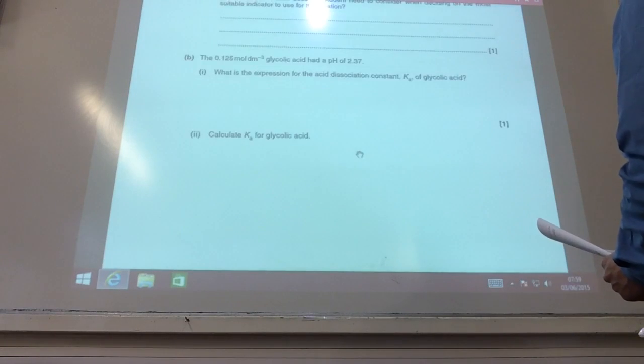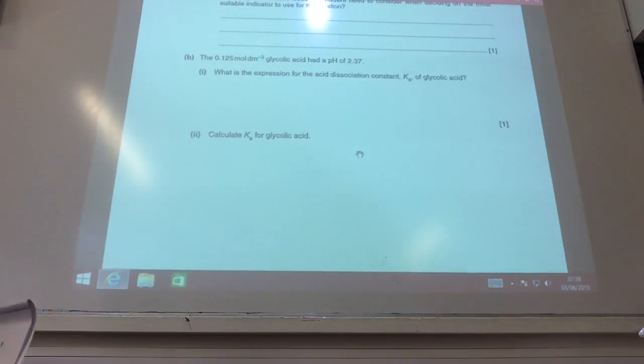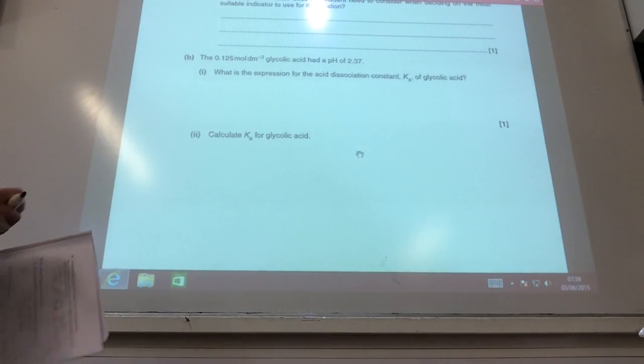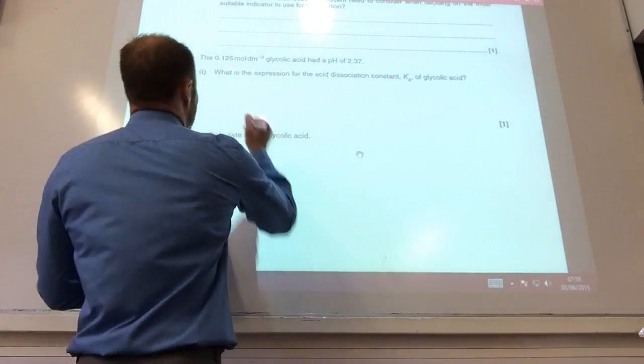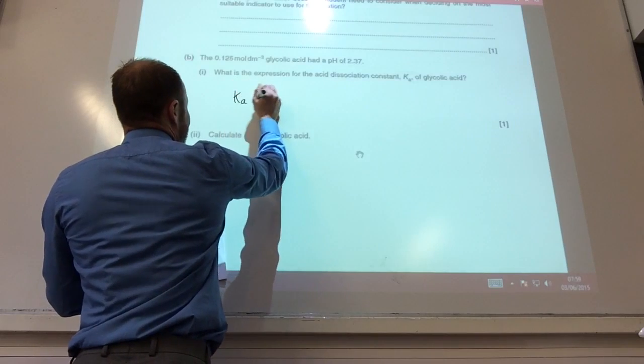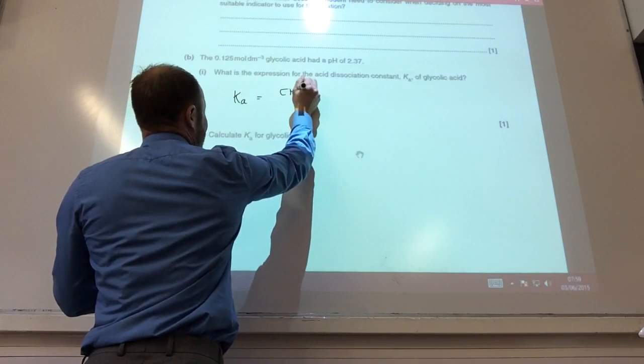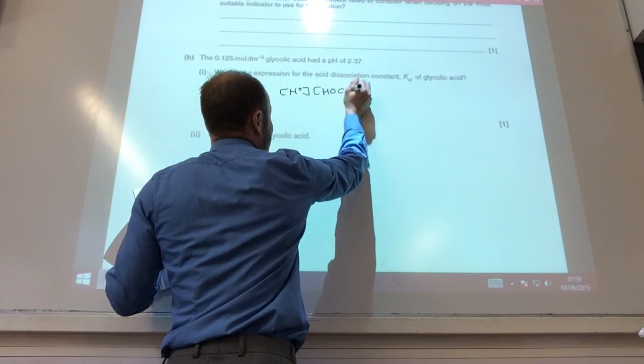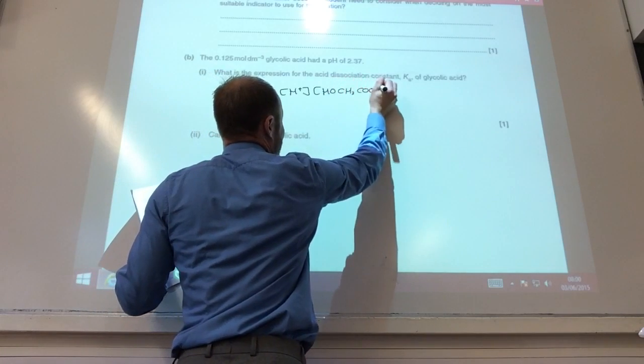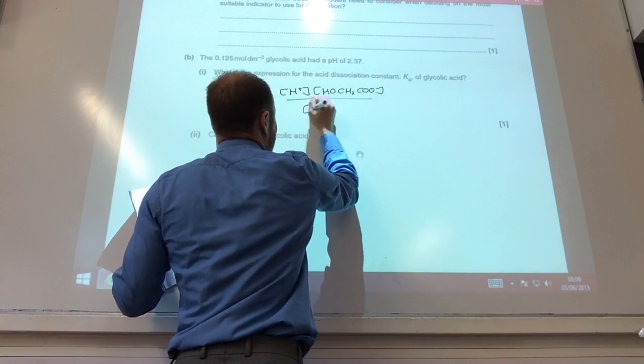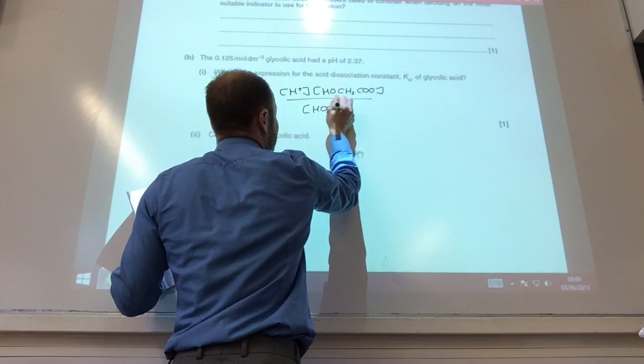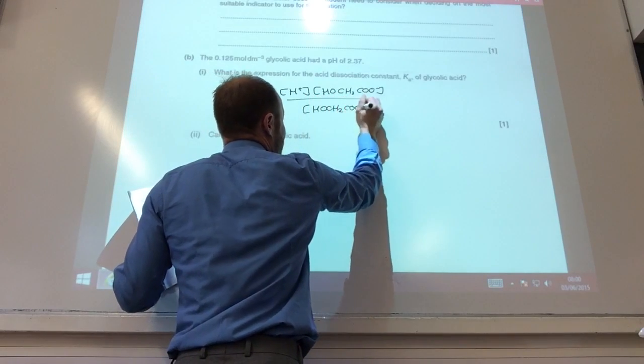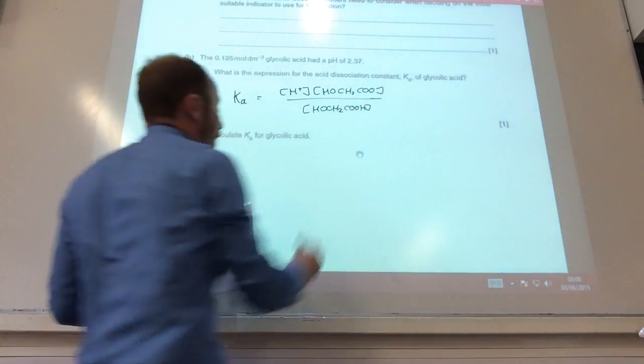We've got some more calculations now, so let's whiz through those. What is the expression of Ka for glycolic acid? Ka is going to be concentration of H+, HOCH2COO- over the concentration of the acid, like so.